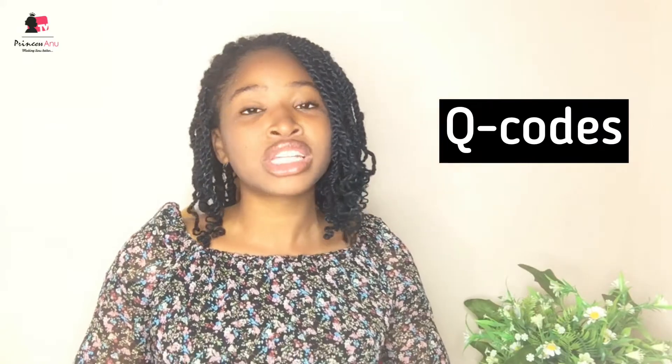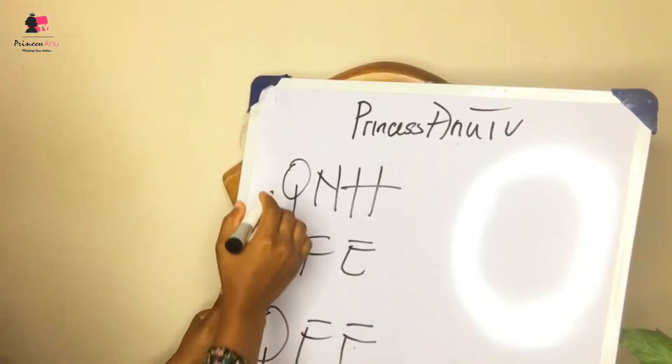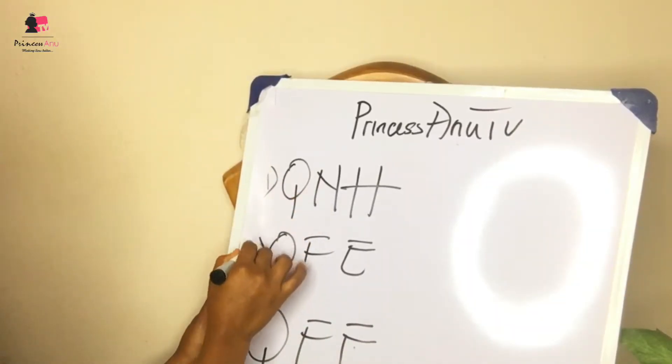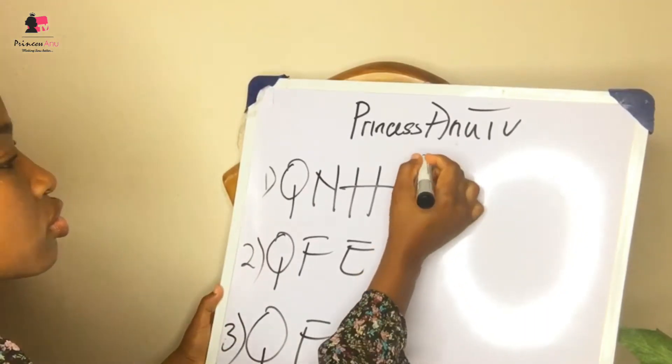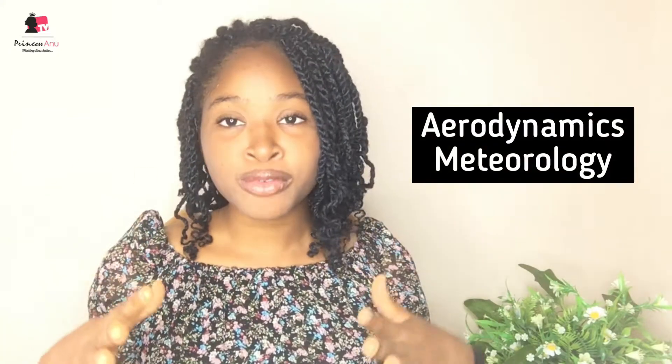On today's episode we are going to be talking about three very important Q codes — QNH, QFE, and QFF. I was discussing with a friend yesterday and discovered he was having issues understanding the Q codes. I remembered when I started learning aerodynamics and meteorology these things were confusing, so I want to simplify them so you can understand the difference between QNH, QFE, and QFF.